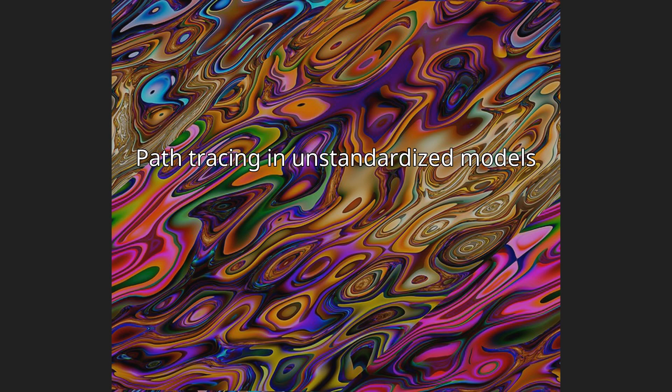Path tracing in unstandardized models. If the modeled variables have not been standardized, an additional rule allows the expected covariances to be calculated, as long as no paths exist connecting dependent variables to other dependent variables. The simplest case obtains where all residual variances are modeled explicitly. In this case, in addition to the three rules above, calculate expected covariances by computing the product of coefficients in each route between the variables of interest, tracing backwards, changing direction at a two-headed arrow, then tracing forwards.